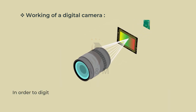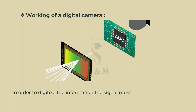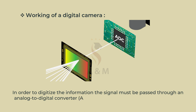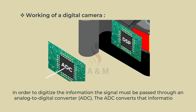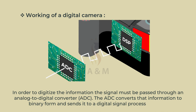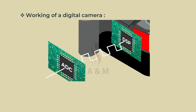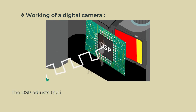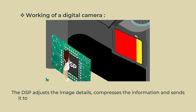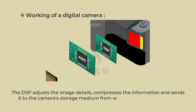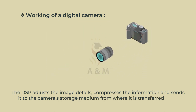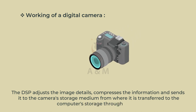In order to digitize the information, the signal must be passed through an analog-to-digital converter, i.e. ADC. The ADC converts that information to binary form and sends it to a digital signal processor, i.e. DSP. The DSP adjusts the image details, compresses the information and sends it to the camera storage medium, from where it is transferred to the computer storage through a cable.